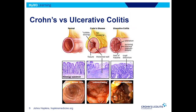Often people ask: what's the difference between Crohn's and ulcerative colitis besides the locations? This is a nice slide from Johns Hopkins where you can see the normal bowel on the left side. The hallmark of Crohn's disease is that it's a transmural inflammatory process — the whole wall is involved — compared to ulcerative colitis where just the surface is involved in the inflammatory process.